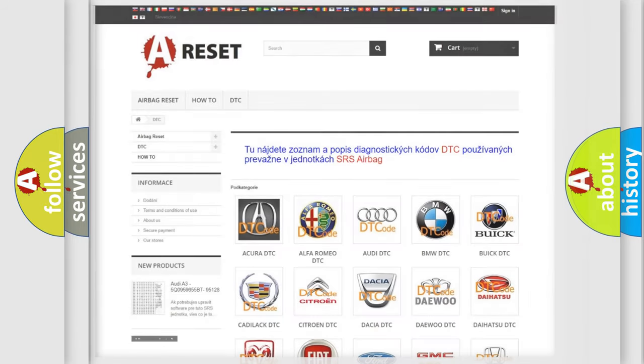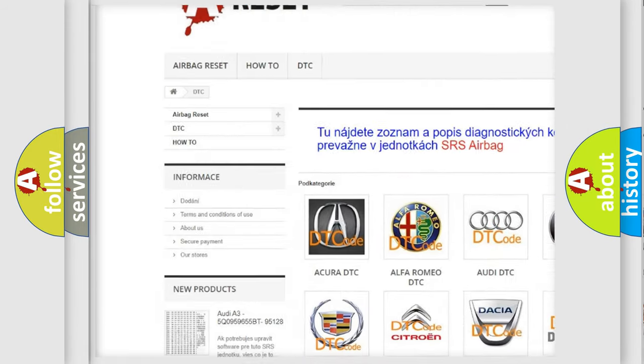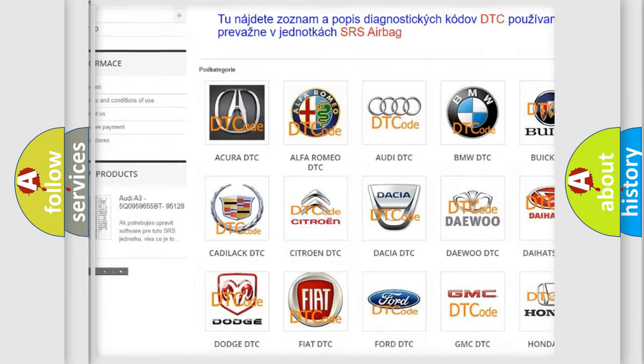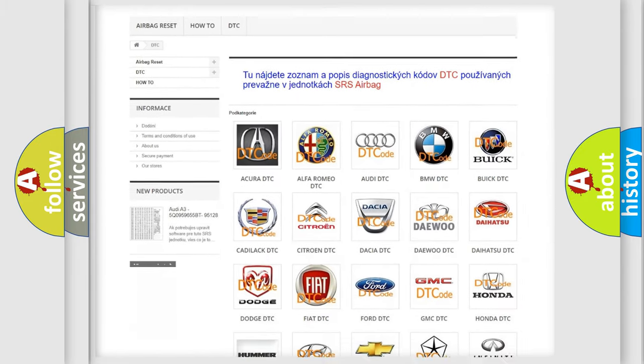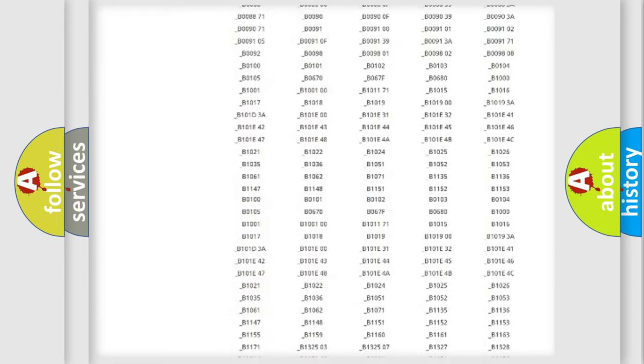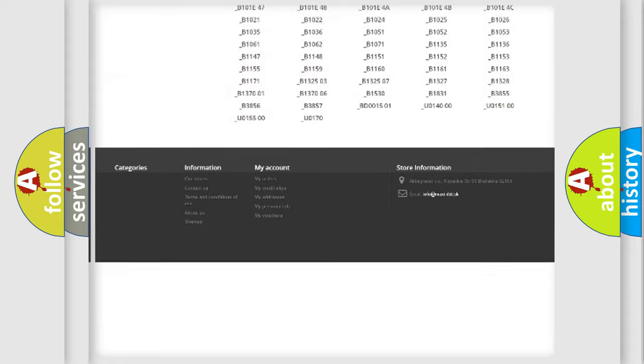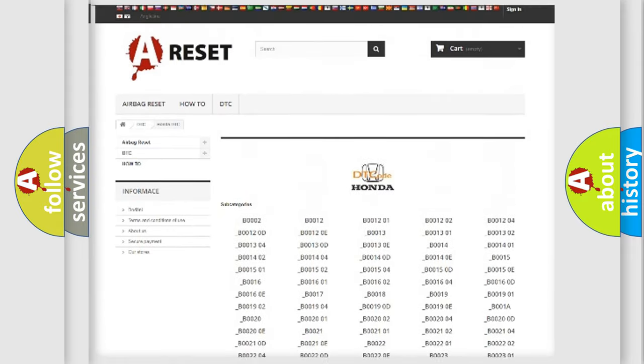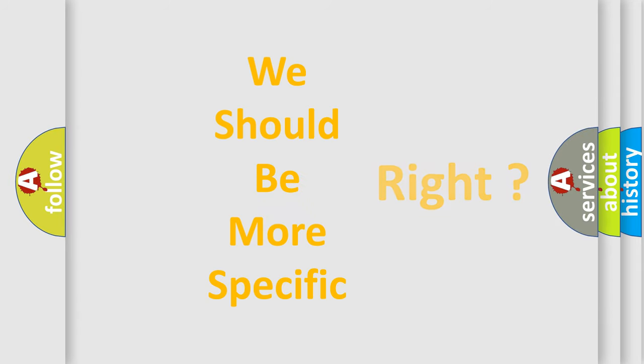Our website airbagreset.sk produces useful videos for you. You do not have to go through the OBD2 protocol anymore to know how to troubleshoot any car breakdown. You will find all the diagnostic codes that can be diagnosed in Honda vehicles, and many other useful things. The following demonstration will help you look into the world of software for car control units.